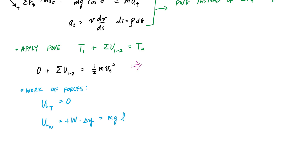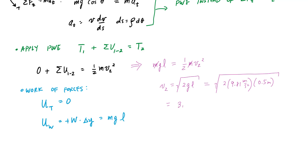Putting it all together in the principle of work and energy: the only work is due to weight, so M-g-L equals one-half m V2 squared. The masses cancel, giving V2 equals the square root of 2gL. This is a well-known pendulum result. V2 equals 3.13 meters per second — a scalar speed at 90 degrees.